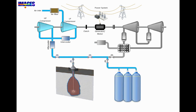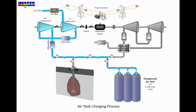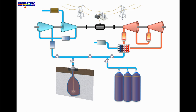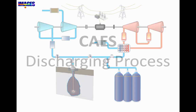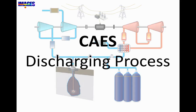For small-scale systems, an overground air tank can be used. The compression process normally uses inter-coolers and after-coolers to reduce the working temperature of the injected air, thus improving the compression efficiency and minimizing thermal stress on the system component walls. The pressure of compressed air in an overground tank is up to 300 bar.